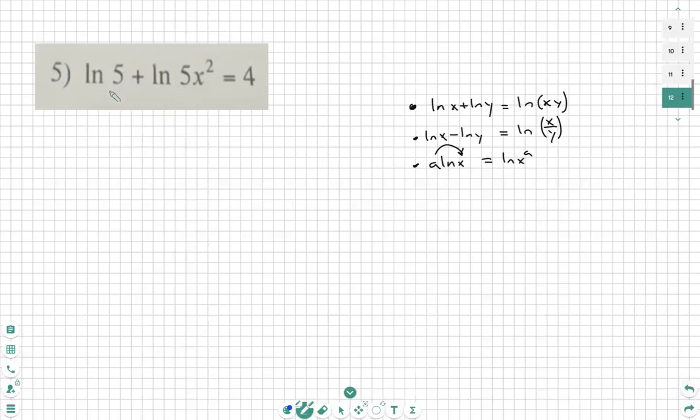Well, since it's ln of 5 plus ln of 5x squared, I know I can multiply these two. So it'll be the ln of 5 times 5x squared.